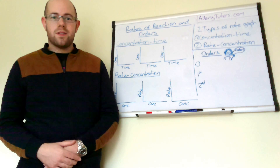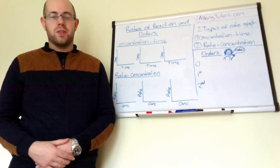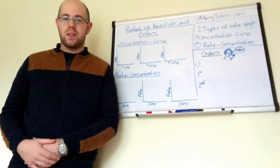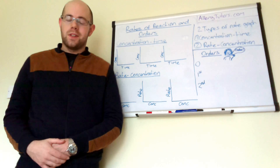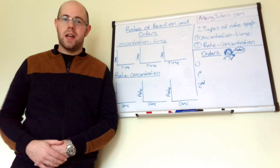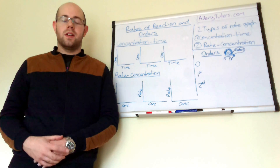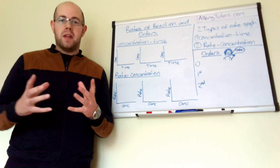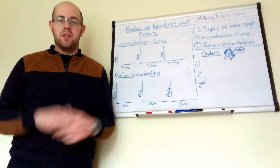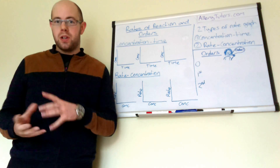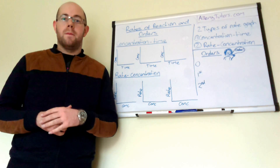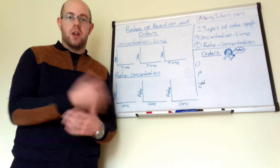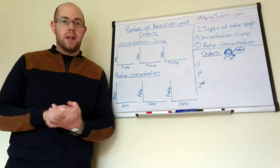Hi everyone, my name is Chris Harris and I'm from aloetutors.com. In this video we're going to look at rates of reaction and order. This is a very common concept in A2 chemistry — it's asked a lot — and the main basis around it are graphs and using experimental data to plot your graphs, and from those graphs you can work out something called order of reaction.